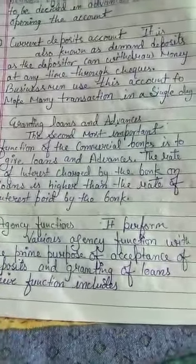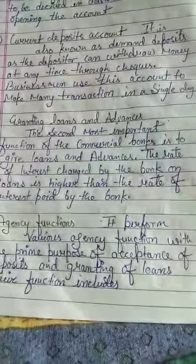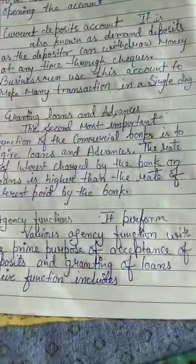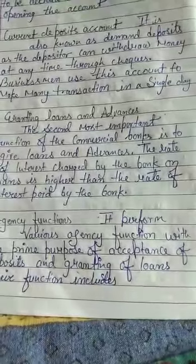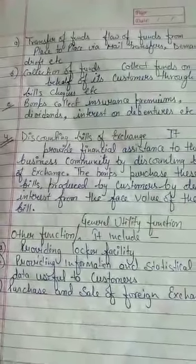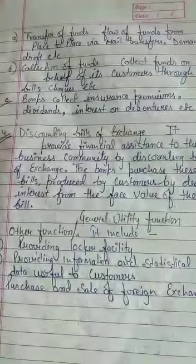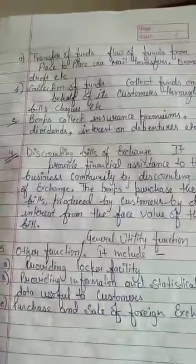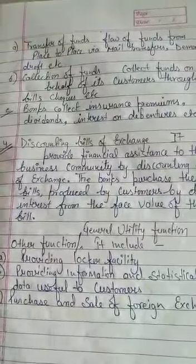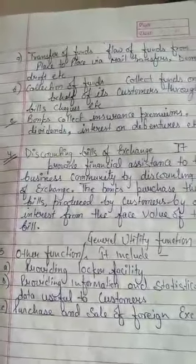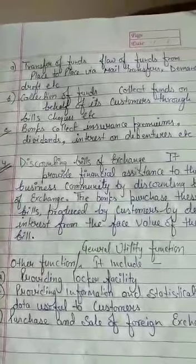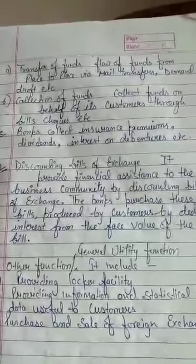Third function hai agency functions. Jaise humne loan liya to loan ki EMI apne aap deduct ho jaati hai — hum log khud paise dene nahi jaate. Bank ek agent ki tarah kaam karta hai aur hamara paisa kaat leta hai. Iske alawa bank collection bhi karta hai customer ki behalf mein — cheques, insurance premium, dividend, interest — yeh sab collect kar leta hai.